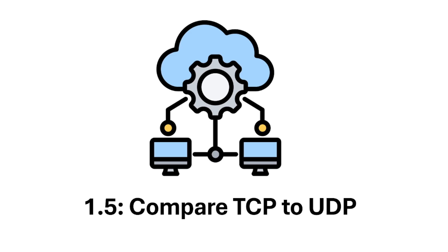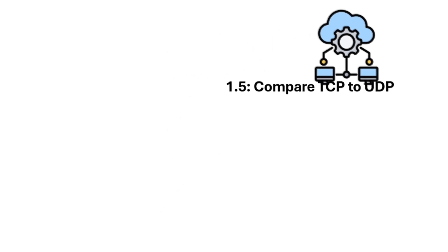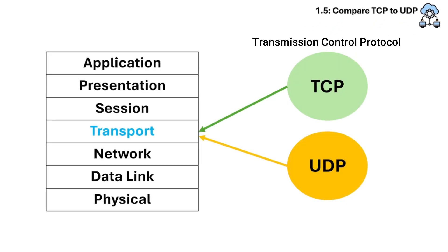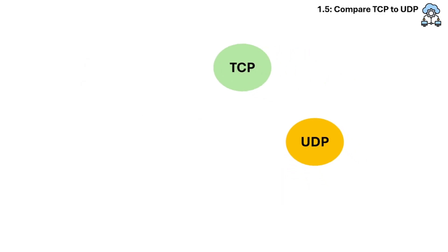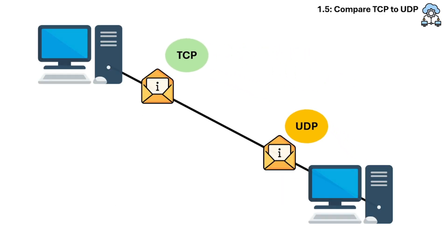Section 1.5 is about TCP and UDP. TCP, or Transmission Control Protocol, and UDP, User Datagram Protocol, are Layer 4 protocols in the OSI model. They are used to send data over a network but they do it in different ways, each suited for different use cases.